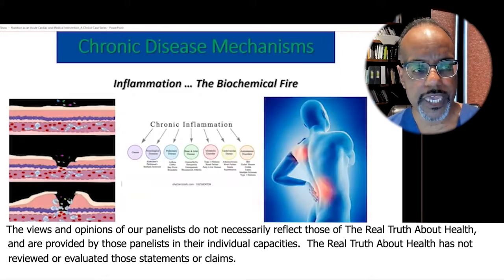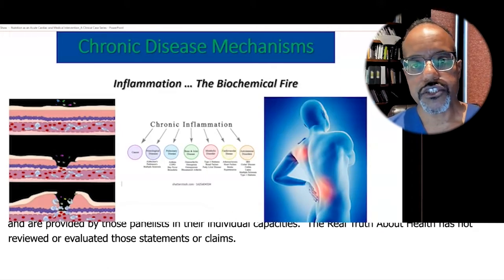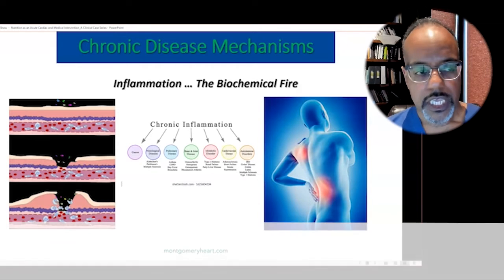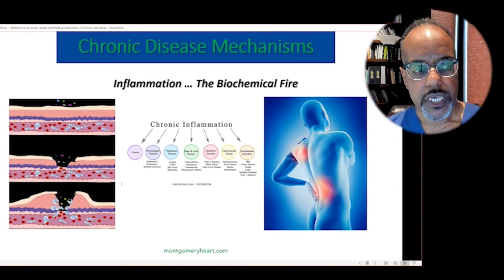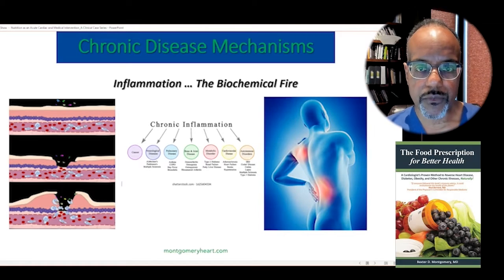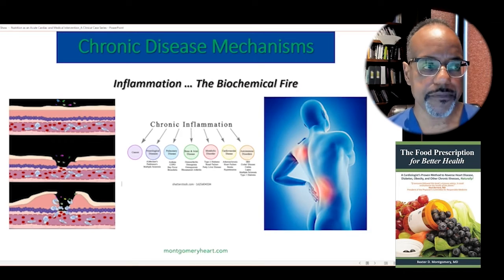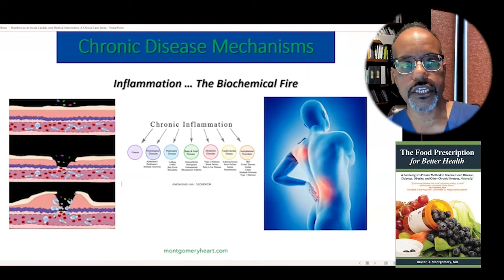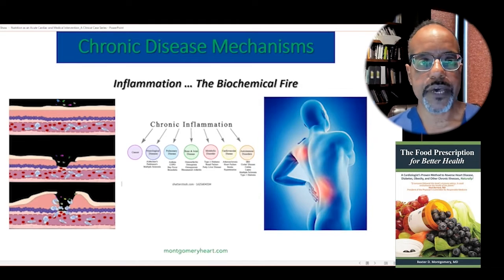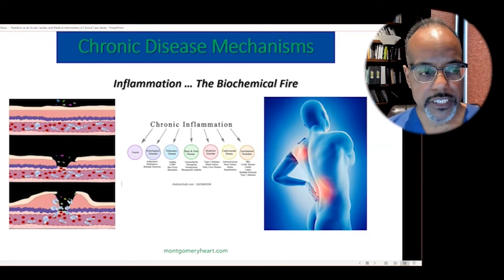But what underlies these chronic illnesses? The two areas I want to focus on today are inflammation and oxidative stress. An abnormal microbiome could be a third. I won't talk about that very much today, but perhaps in a future talk I'll discuss the abnormal microbial ecosystem, which I think has a big impact on your overall health.